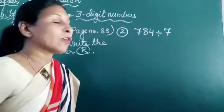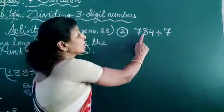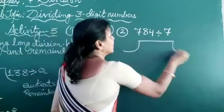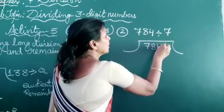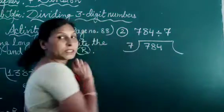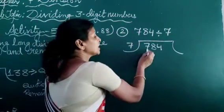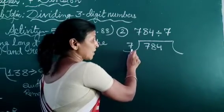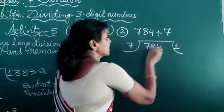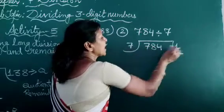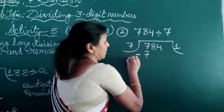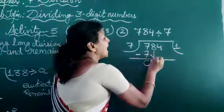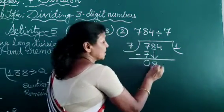Now the second problem is 784 divided by 7. The dividend we write it here and the divisor we write it here. Again we see the single digit, which is equal to the divisor. So 1 time it goes, and we write 7 ones are 7. Then subtract it — we write 0 here.